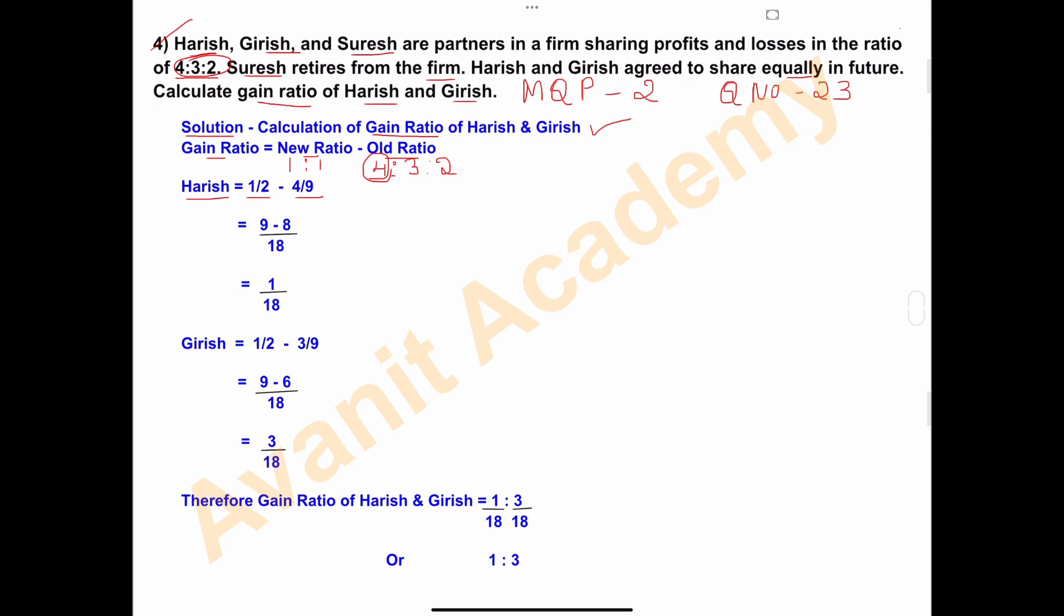The LCM of 2 and 9 is 18. So 2 is multiplied by 9, and 9 is multiplied by 2. For the calculation 1 upon 2 minus 4 upon 9: 1 times 9 is 9, and 2 times 4 is 8. 9 minus 8 is 1, so 1 upon 18. Therefore, Harish's gain ratio is 1 upon 18.